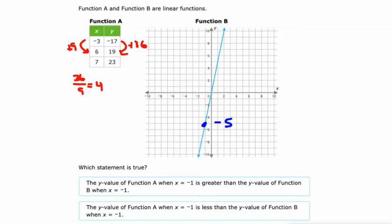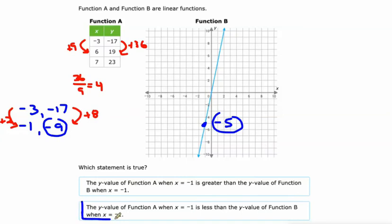So if we want to go from negative 3 up to negative 1, because that's the X value we're working with, then our Y value, negative 17, would have to go up 4 twice, which is 8. So that would put us at negative 9. So negative 9 compared to negative 5, the Y value of A is less than the Y value of B. Negative 9 is less than negative 5.